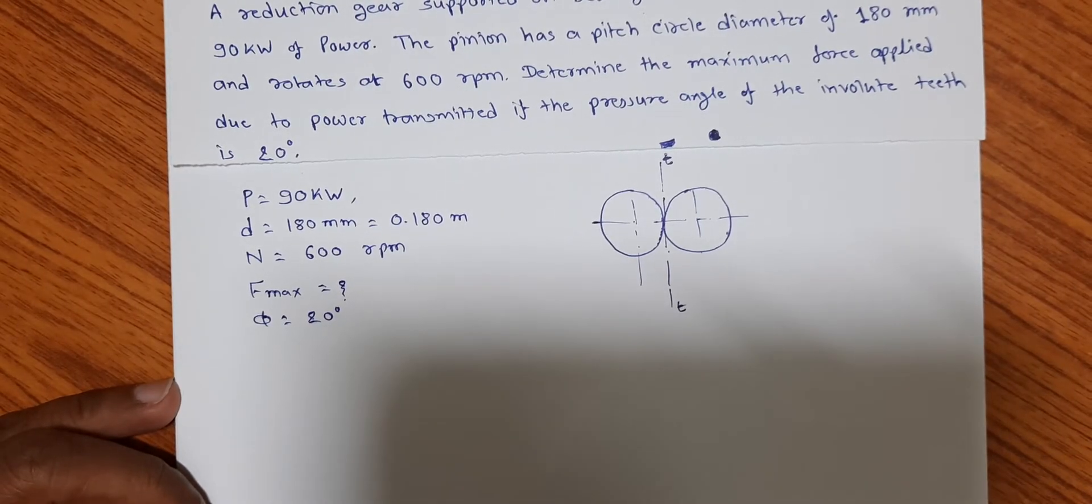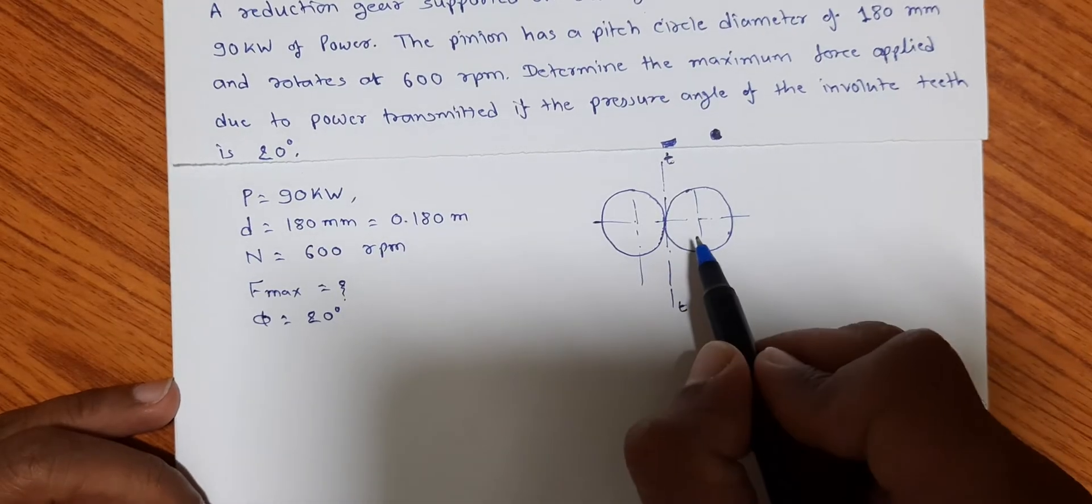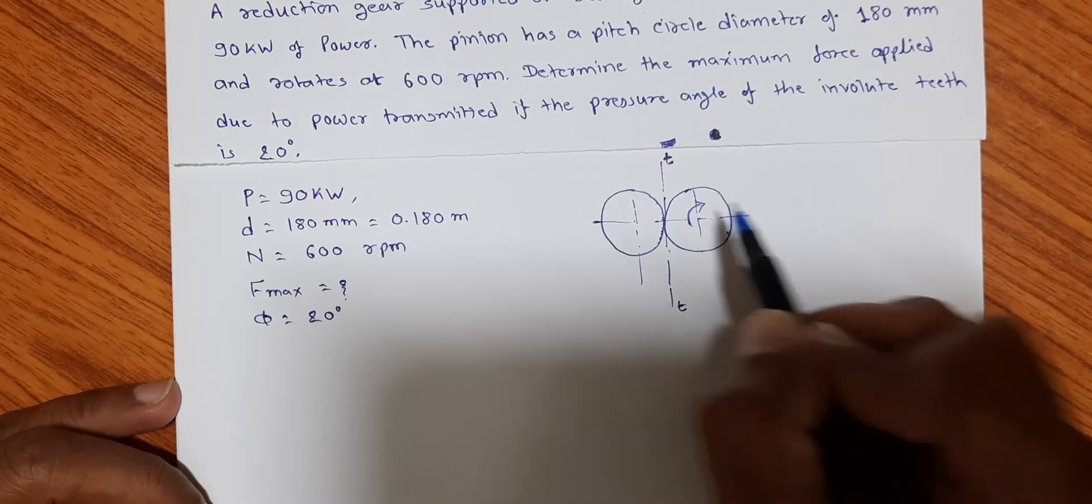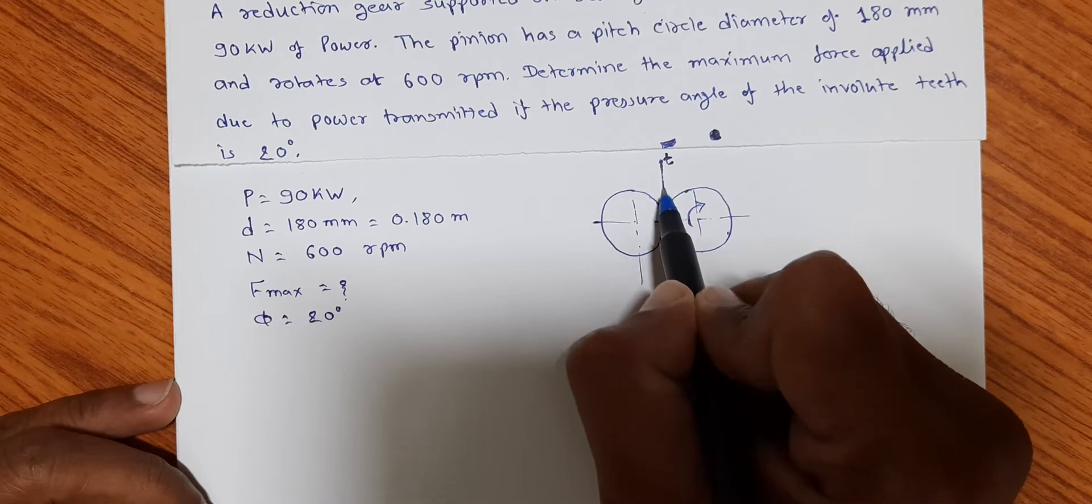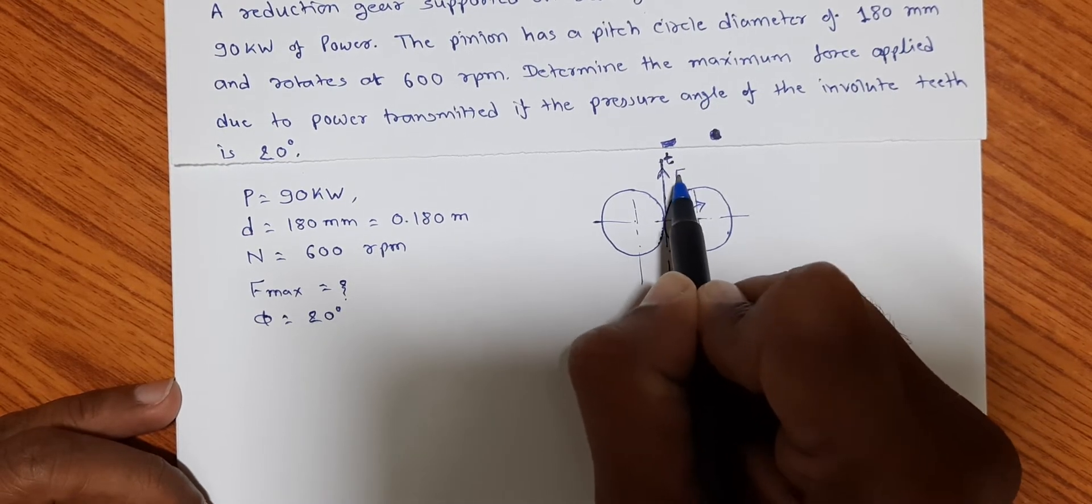Along which, because of rotation of this, the force acts. Let us say the rotation direction is this, so the force will act radially perpendicular in this direction, say F.